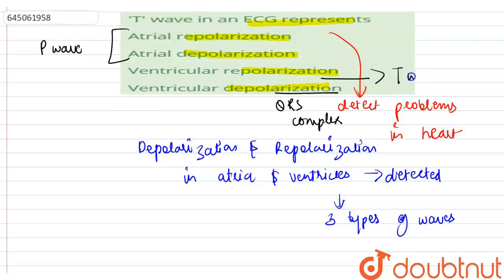The other options are incorrect because atrial repolarization and atrial depolarization are represented by the P wave, and ventricular depolarization is represented by the QRS complex. So, T wave in an ECG represents ventricular repolarization.